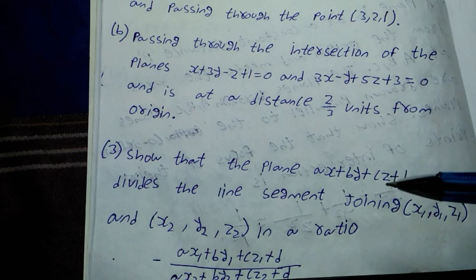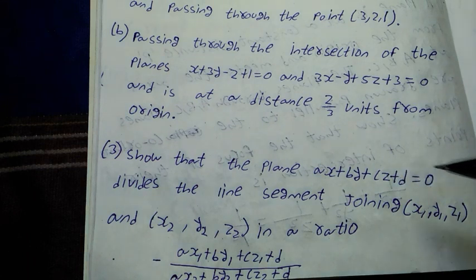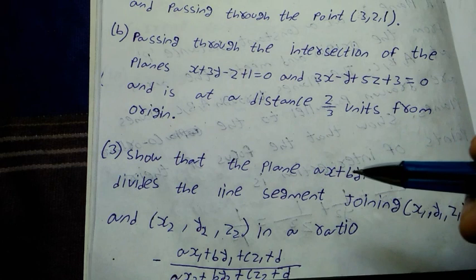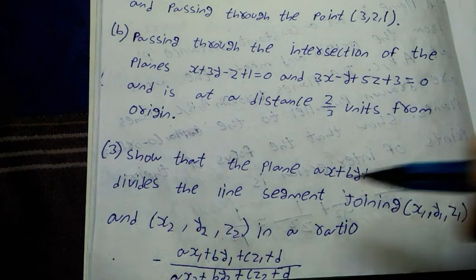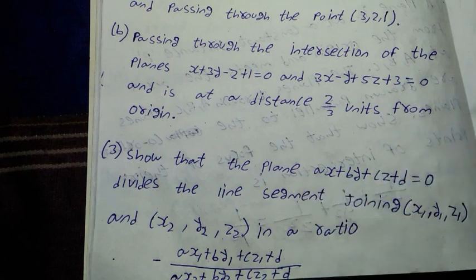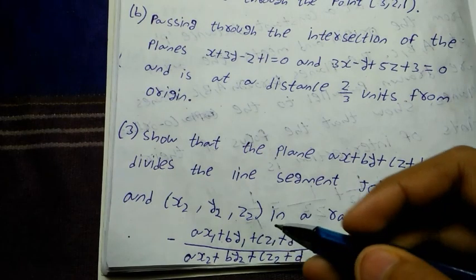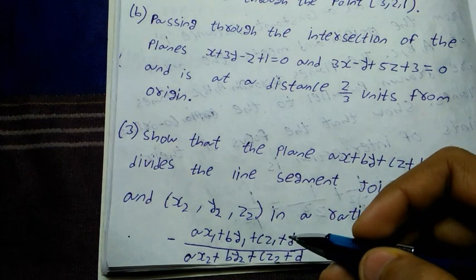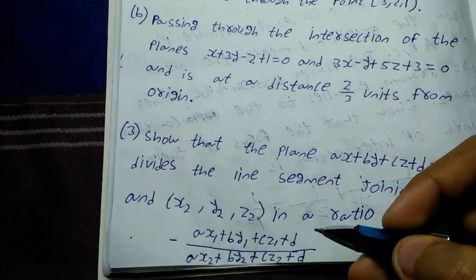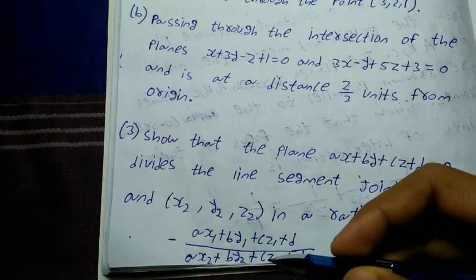Number 3 question: show that the plane ax plus by plus cz plus d equal to 0 divides the line segment joining (x1, y1, z1) and (x2, y2, z2) in the ratio minus (ax1 plus by1 plus cz1 plus d) by (ax2 plus by2 plus cz2 plus d).